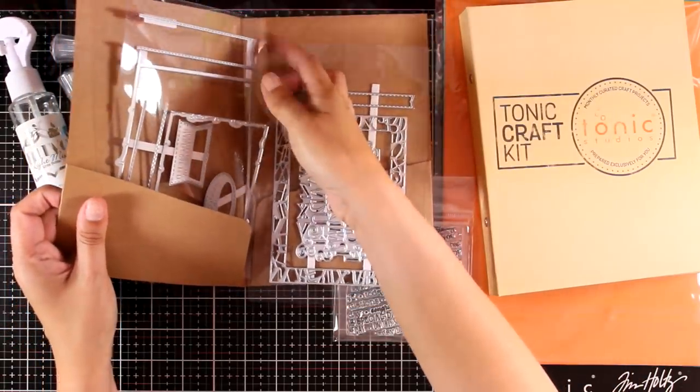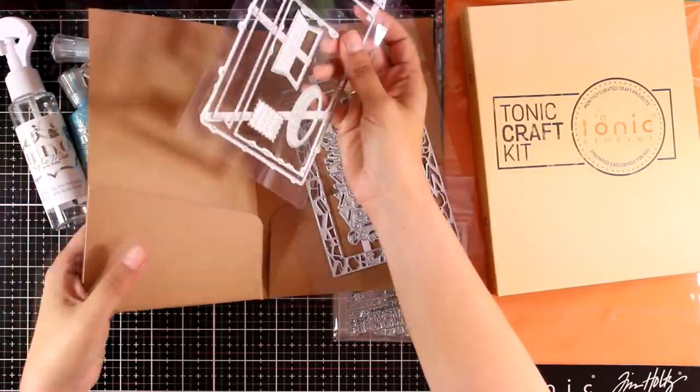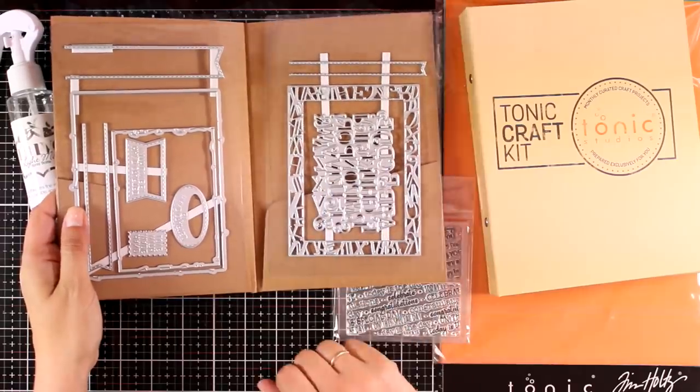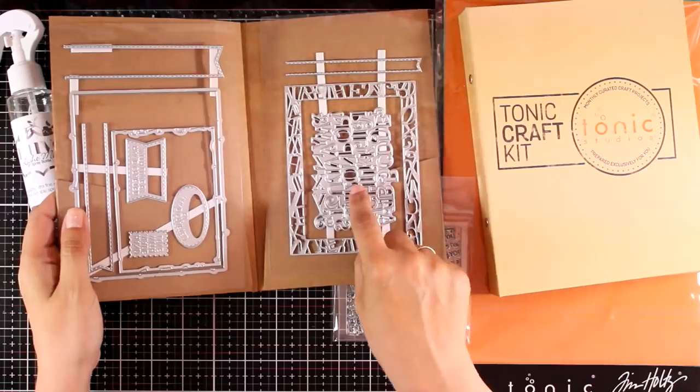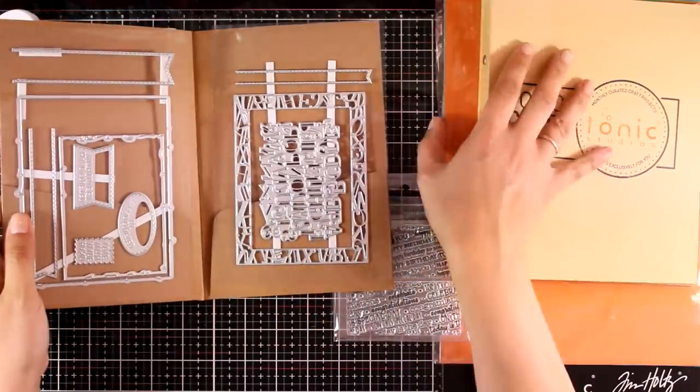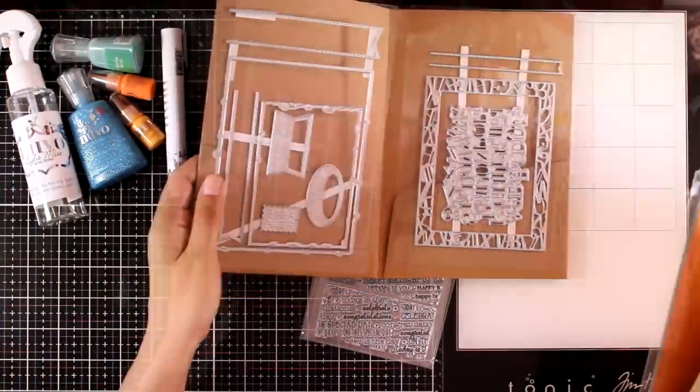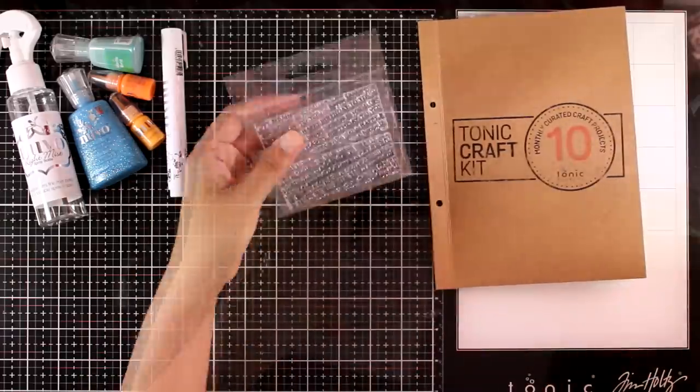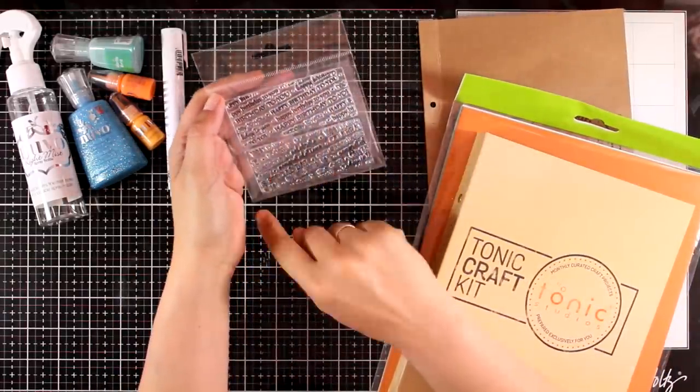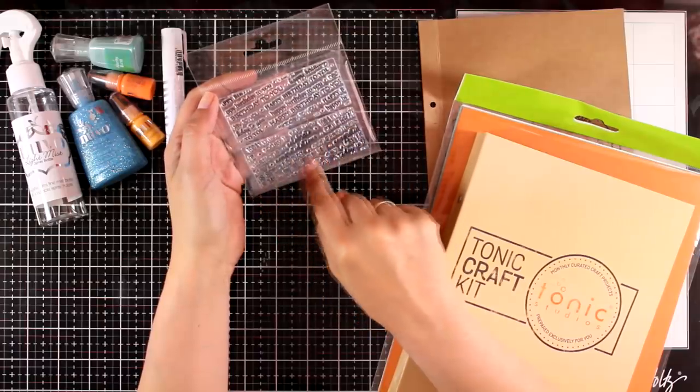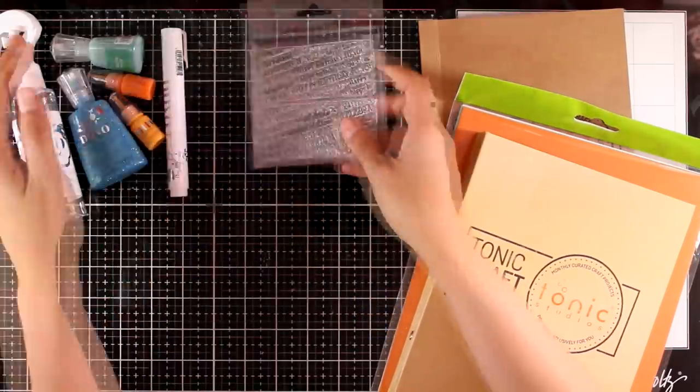So here are all the dies, 10 of them. They are called Alphabet Frame die set. It cuts out borders, it cuts out two different fonts of alphabet, it gives you lots of frames. But first let's take a look at the stamps. These are word background stamps. The first one is all about happy birthday in different fonts, and the second one is about celebrations and congratulations in different fonts as well.